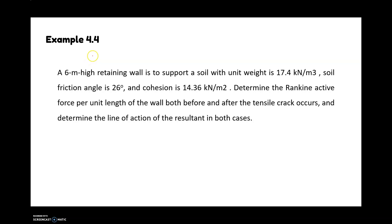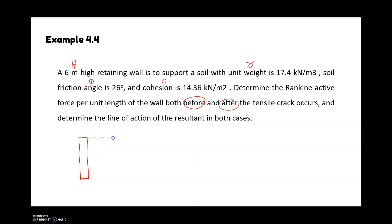Okay, here is the solution for point four. After we get this type of question, you need to understand the parameters or properties given. So h is 6 meters, gamma value, phi value (friction angle), and cohesion c value are provided. The question asks you to determine the active force per unit length of the wall before and after the tensile crack occurs. Try to sketch the retaining wall system first: 6 meters high, soil with phi equal to 26° and c equal to 14.36.